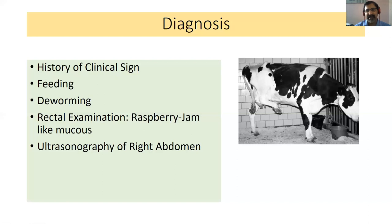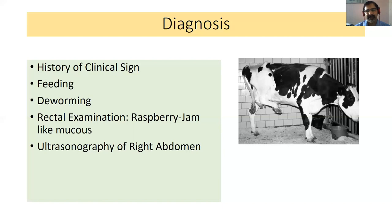The animal completely stops passing dung. Generally, if the colic happens, the animal stops passing dung after 12 to 24 hours — it takes at least 12 to 24 hours for complete cessation of passing dung.